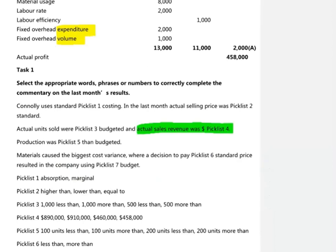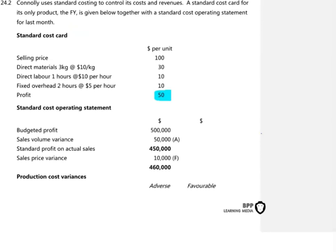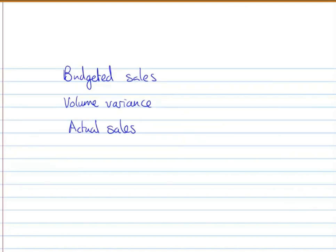The fourth part of the requirement asks us to calculate the actual revenue, so we need to see how many units we sold and what happened with our sales price. One way to find the budgeted level of sales is by looking at our budgeted profit. We budgeted to have a profit of half a million. If that's based on a profit of $50 per unit, we can see how many units we were trying to sell — we must have been looking at selling 10,000 units. Since we budgeted to sell 10,000 units and we know from our volume variance that we sold 1,000 less than planned, the actual sales must have been 9,000 units.